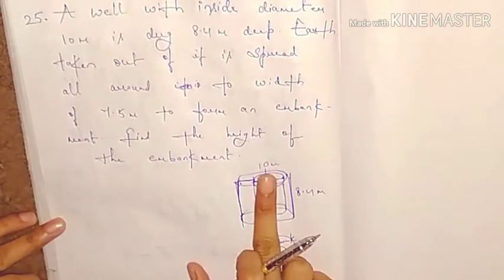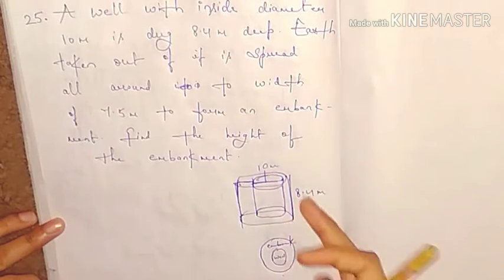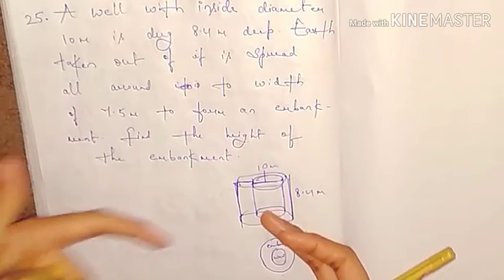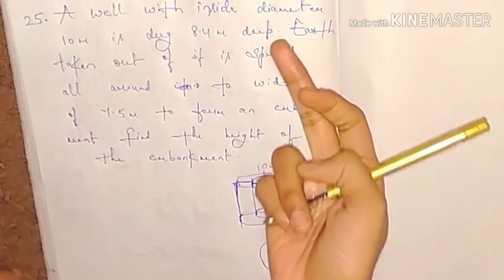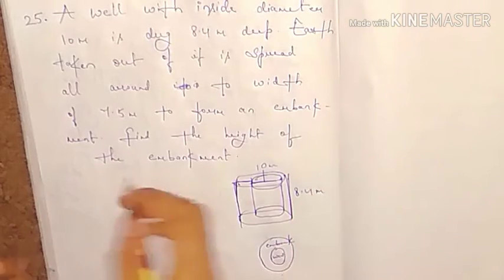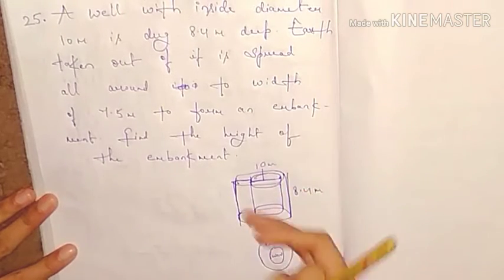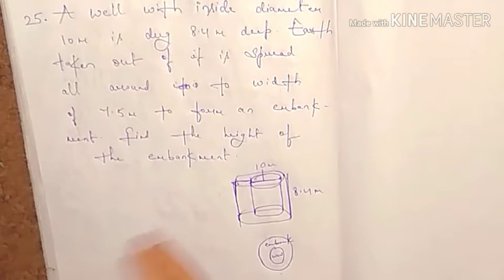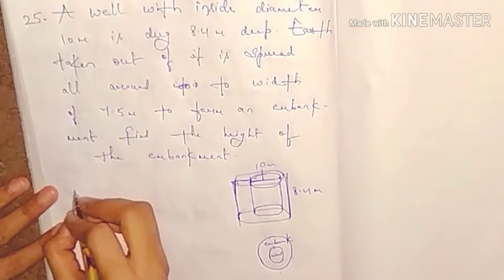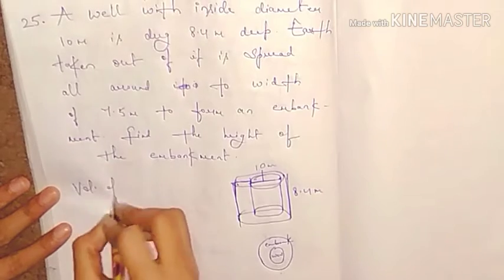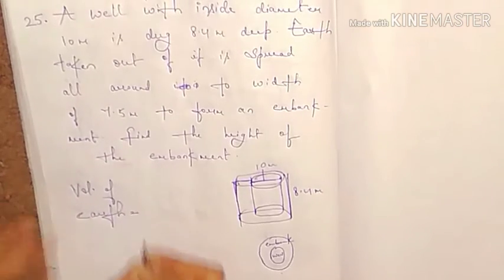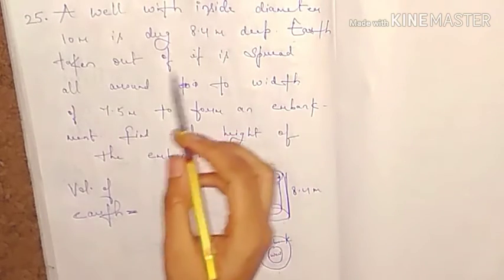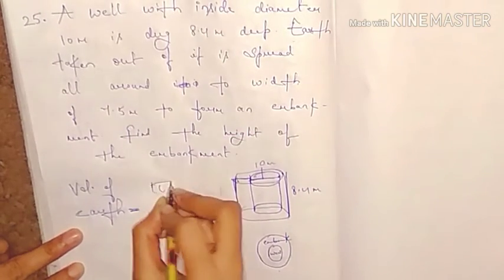The well has a diameter of 10 meters and a depth of 8.4 meters. When we dig into it, we are talking about soil being removed. The volume of the earth removed will be calculated. If you look at the volume of the earth, it is given by the formula pi r squared h.